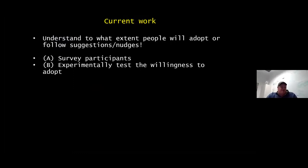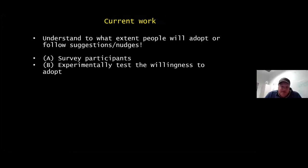Those were two examples of what we mean by adaptive sampling — you first need to understand theoretically how you could do it, and there are many more ways we'll discuss afterward. The next challenge is understanding to what extent people actually adopt or follow suggestions. We took two approaches using FrogID as a case study in Australia: first surveying participants, which Maureen will discuss, and then experimentally testing willingness to adopt nudges.